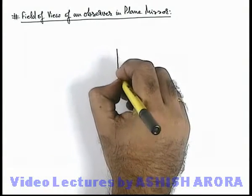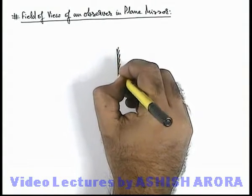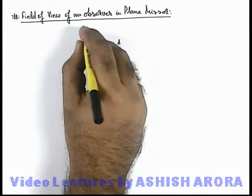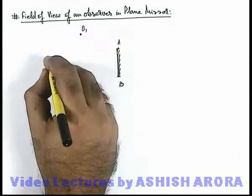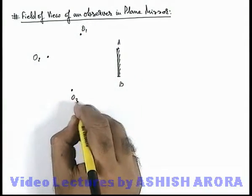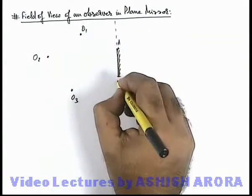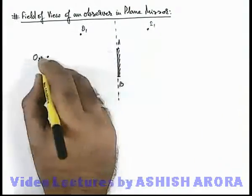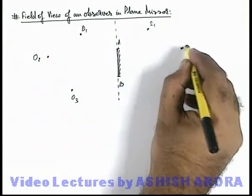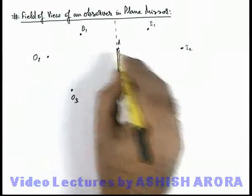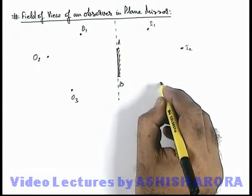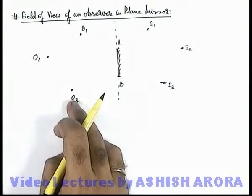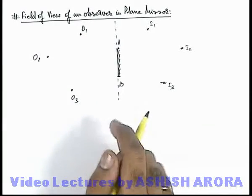Let's consider an example to understand the same. Say we are given a plane mirror AB, and in front of the mirror there are three point objects placed: O1, O2, and O3. As we know, corresponding to every object there will be an image produced at the same distance behind the mirror at which the object is placed. So corresponding to objects O1, O2, and O3, three images I1, I2, and I3 are thus produced.